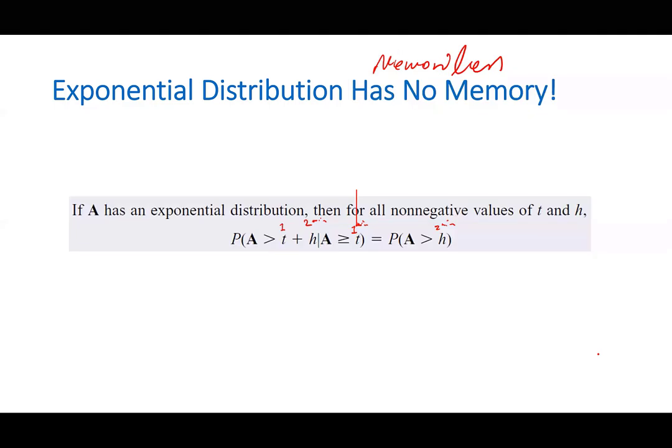The memoryless property tells us: it doesn't matter how much you have waited, or how much time has passed — your memory basically does not help you in predicting the inter-arrival time.